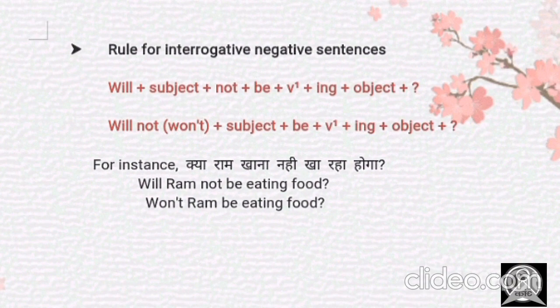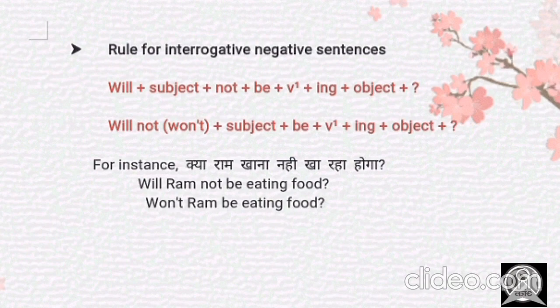Now let's look at interrogative negative sentences. There are two cases. In the first case: 'will' first, then the subject, then 'not' plus 'be' plus verb's first form plus 'ing' plus object plus question mark. The second case: we put 'won't' — the contracted form of 'will not' — plus subject plus 'be' plus verb's first form plus 'ing' plus object plus question mark.